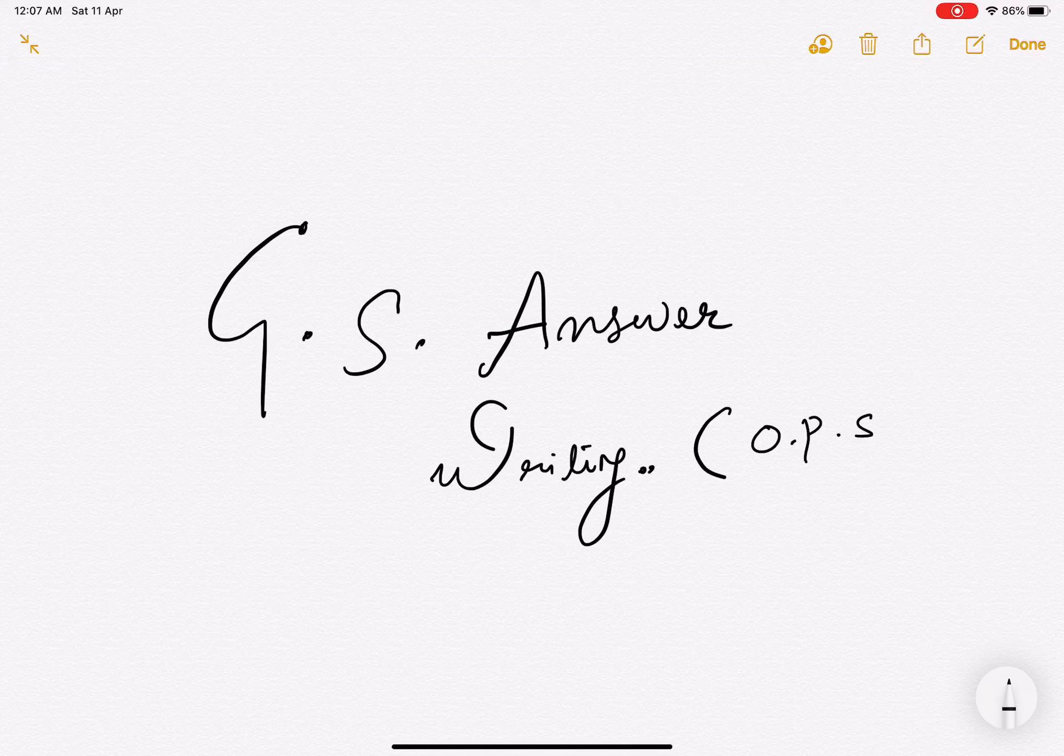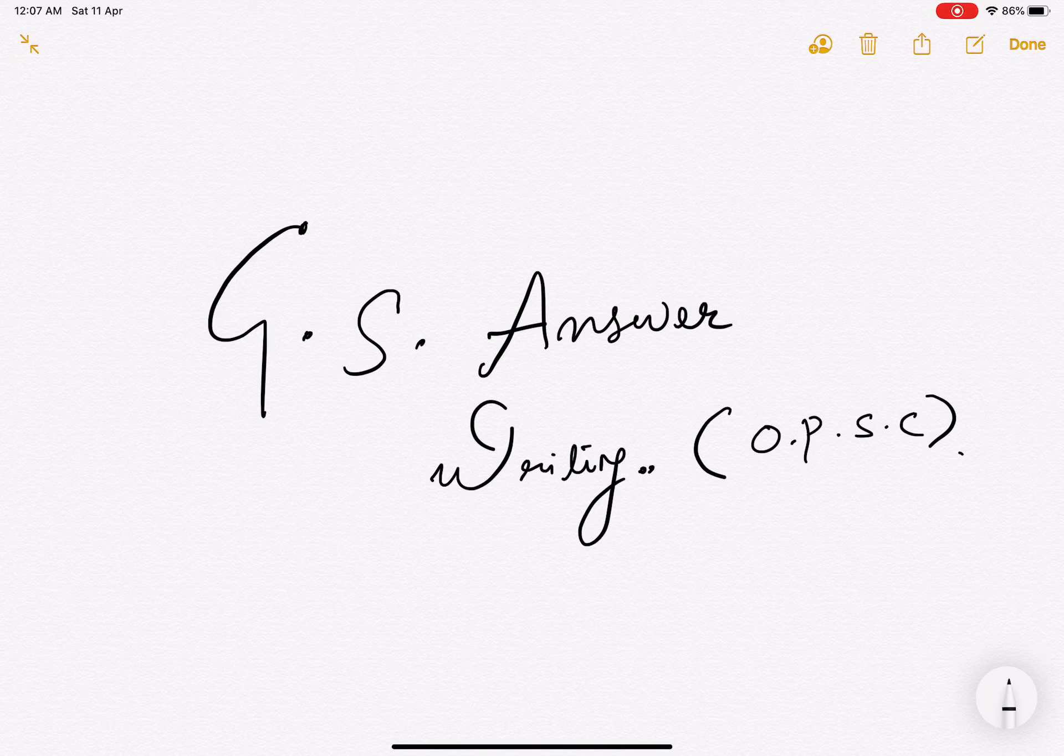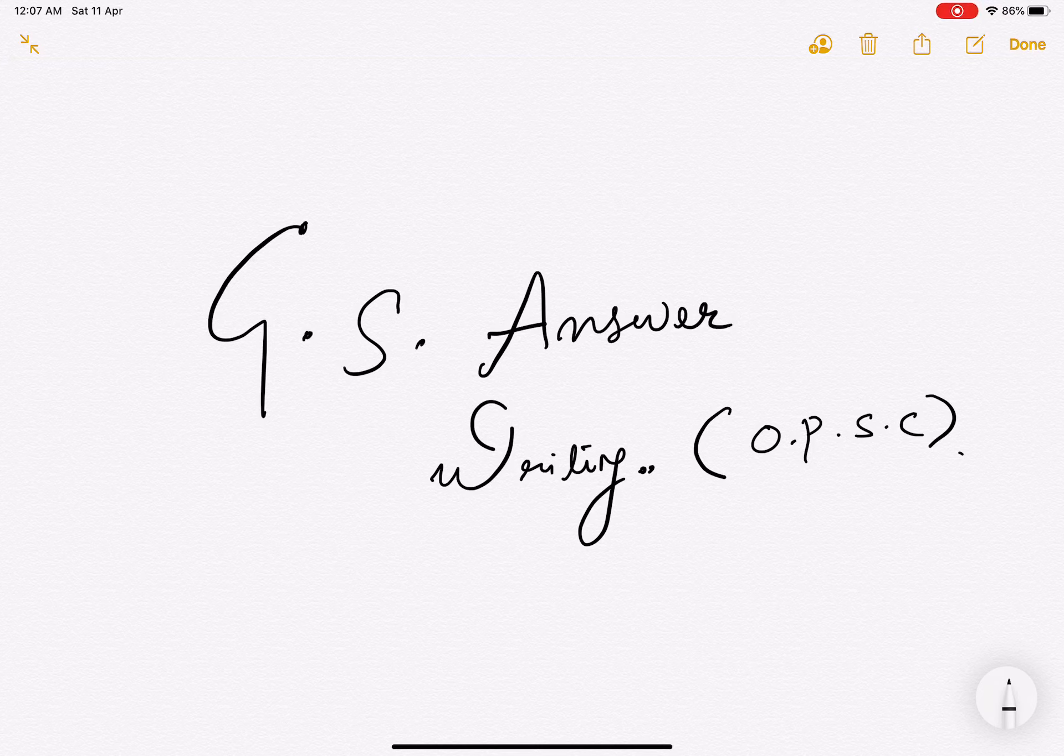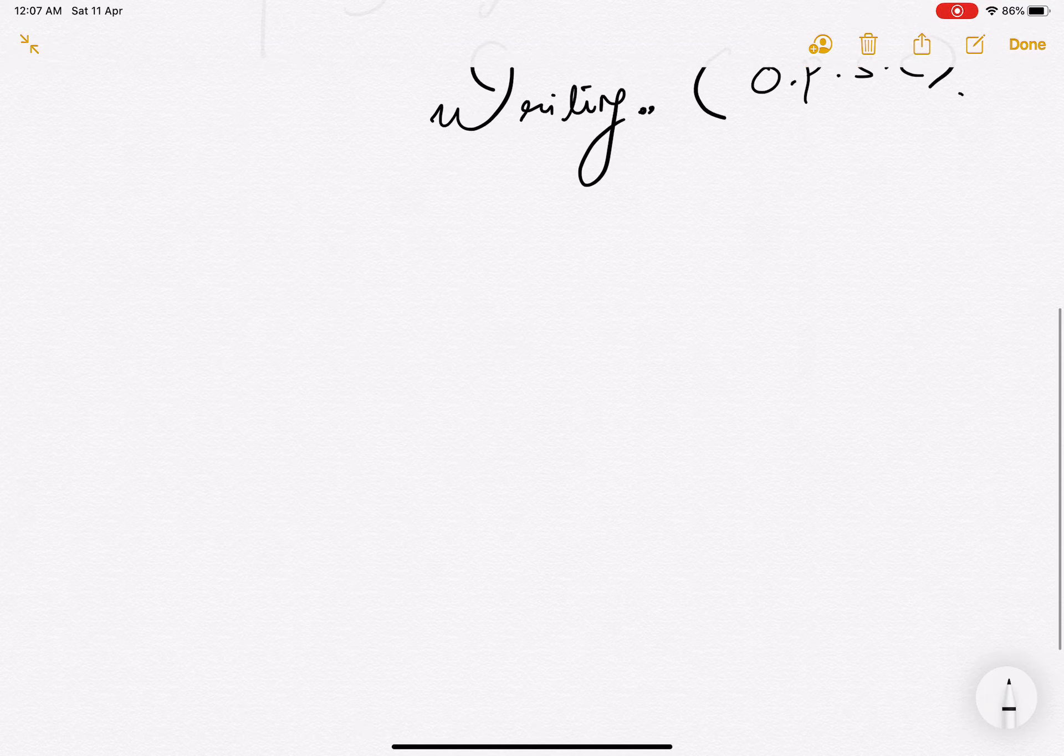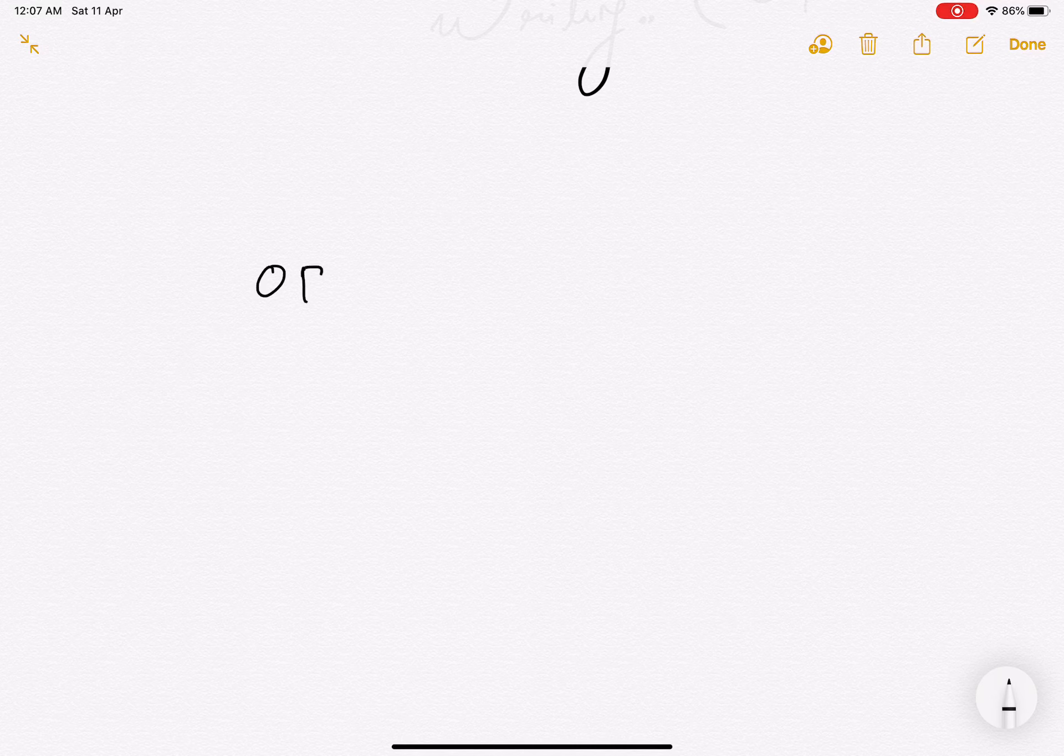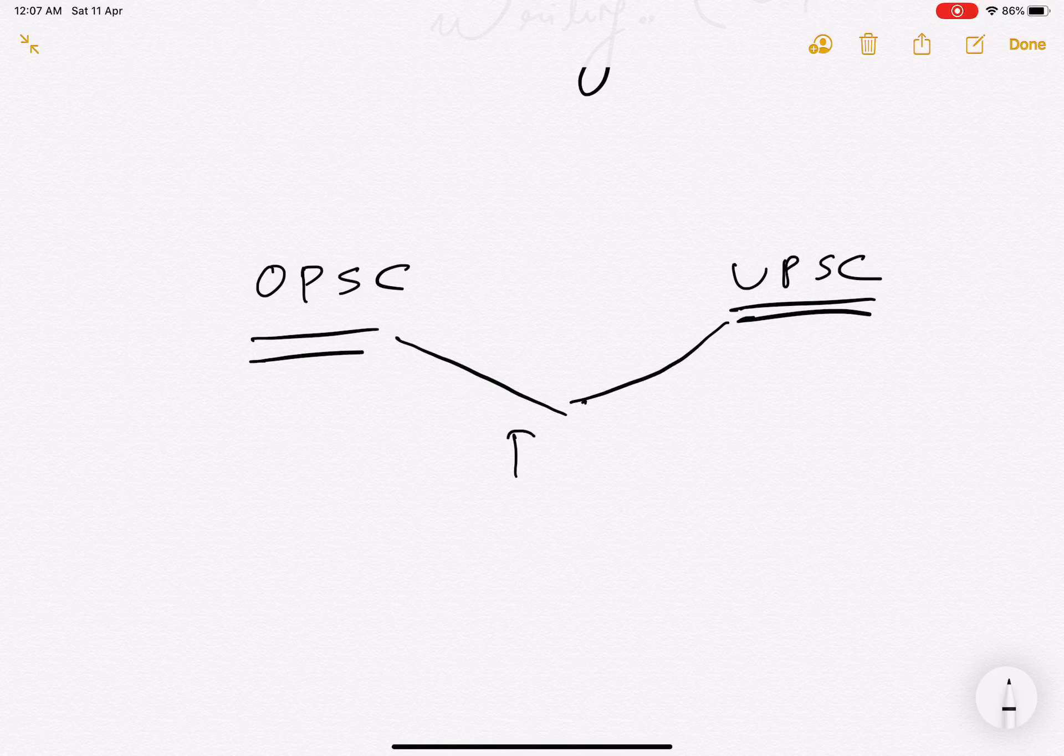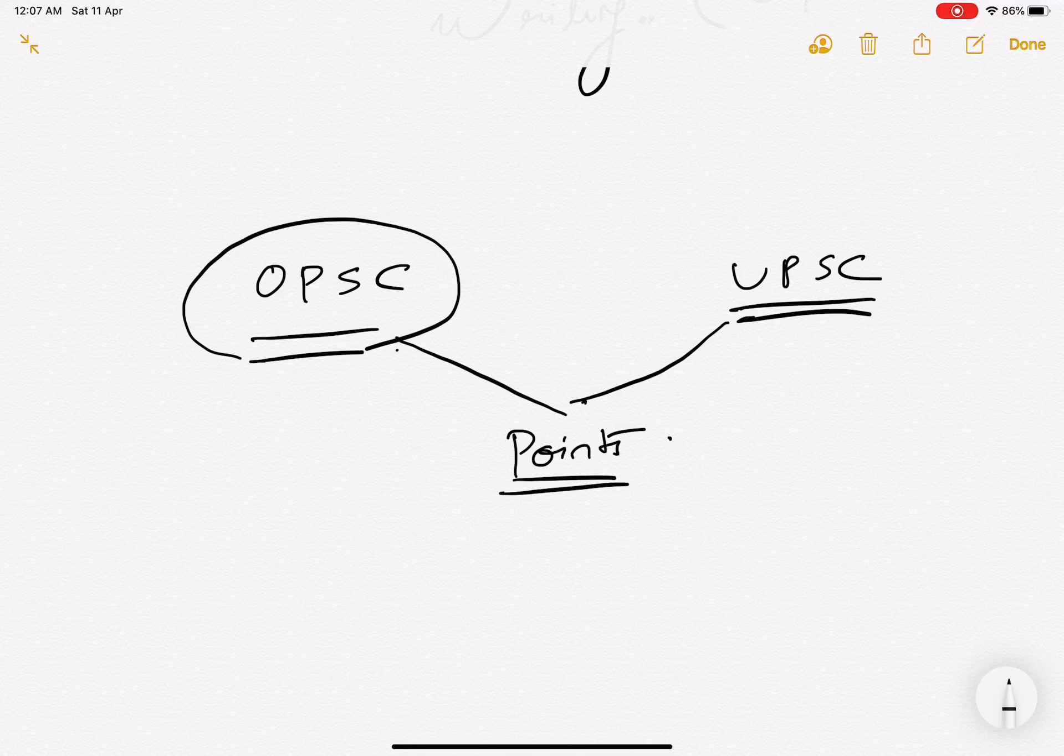Most of us have prepared for the UPSC, and as we know, UPSC always asks to write your answer in points. That is one of the most preferred ways of writing answers. But there is a big difference between OPSC and UPSC. In both contexts you can write answers in points, but what's the problem with the UPSC if you are going for points?